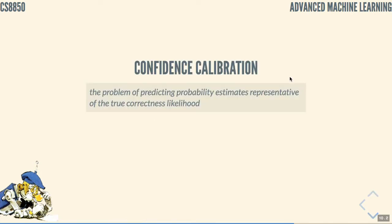It's the problem of predicting probability estimates representative of the true correctness likelihood. So, why do we do it? We want the probability associated with the predicted class label to reflect its ground truth correctness. If that is the case, then we know when to trust a model and when to route that model to a human instead.